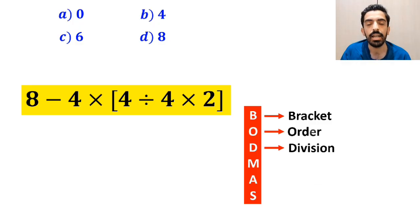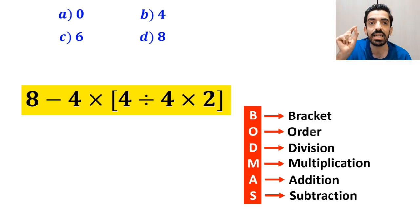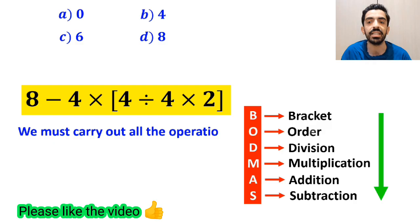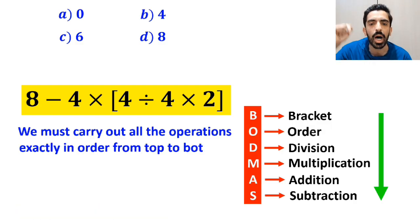D stands for division, M stands for multiplication, A stands for addition, and S stands for subtraction. We must carry out all the operations exactly in order from top to bottom.